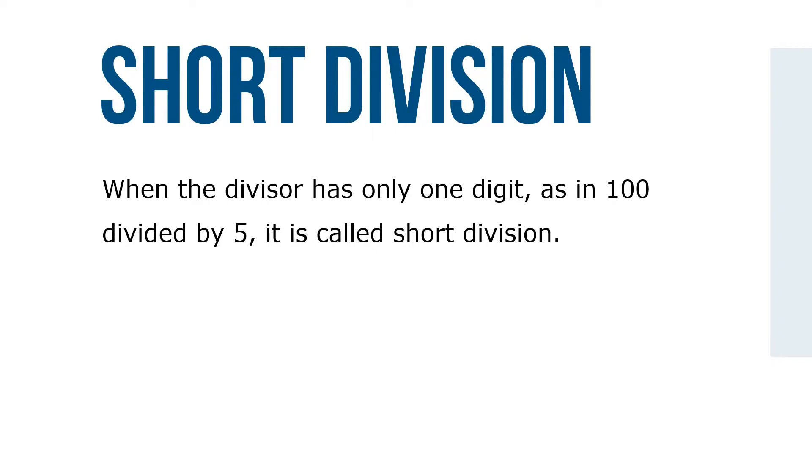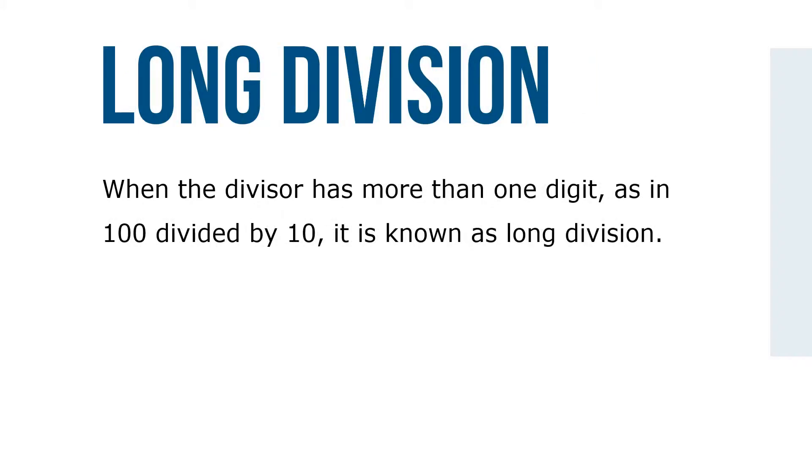When the divisor only has one digit, as in 100 divided by 5, it is called short division. When the divisor has more than one digit, as in 100 divided by 10, it is known as long division.